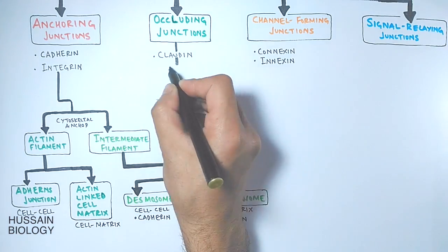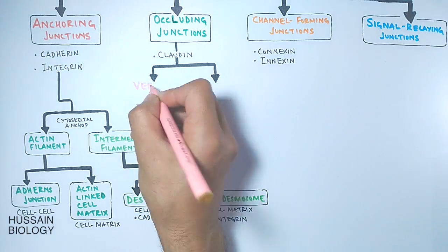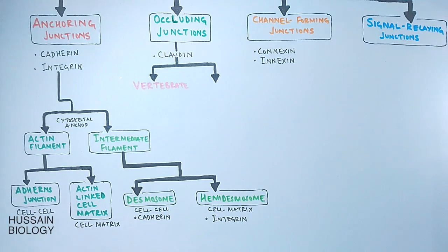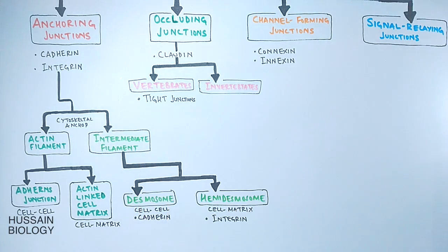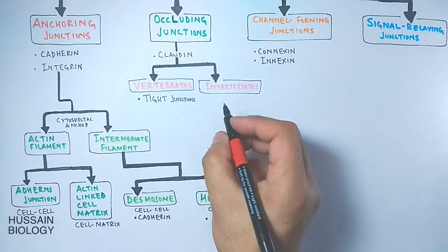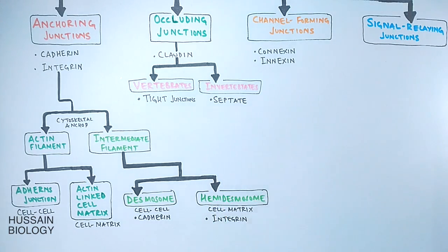Now let's move to the second type — occluding junctions. We classify them based on organism type: in vertebrates these are called tight junctions, while in invertebrates these are called septate junctions.